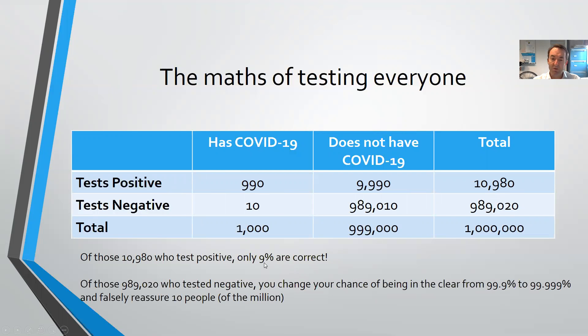If we add up the rows, you can see that of the 10,980 test results that come back positive, only 990, or about 9% of those are correct. So you've gone from a population that has 0.1% being positive, and now you've gone up to about just over 1% of the population apparently testing positive for COVID. And of the people who test negative, nearly all of those will be correct. So if you go from at the start doing no test at all, your chance of being negative is 99.9%, and you take that up to 99.999%, so it's not a big change, and you're falsely going to reassure 10 people. This looks terrible.